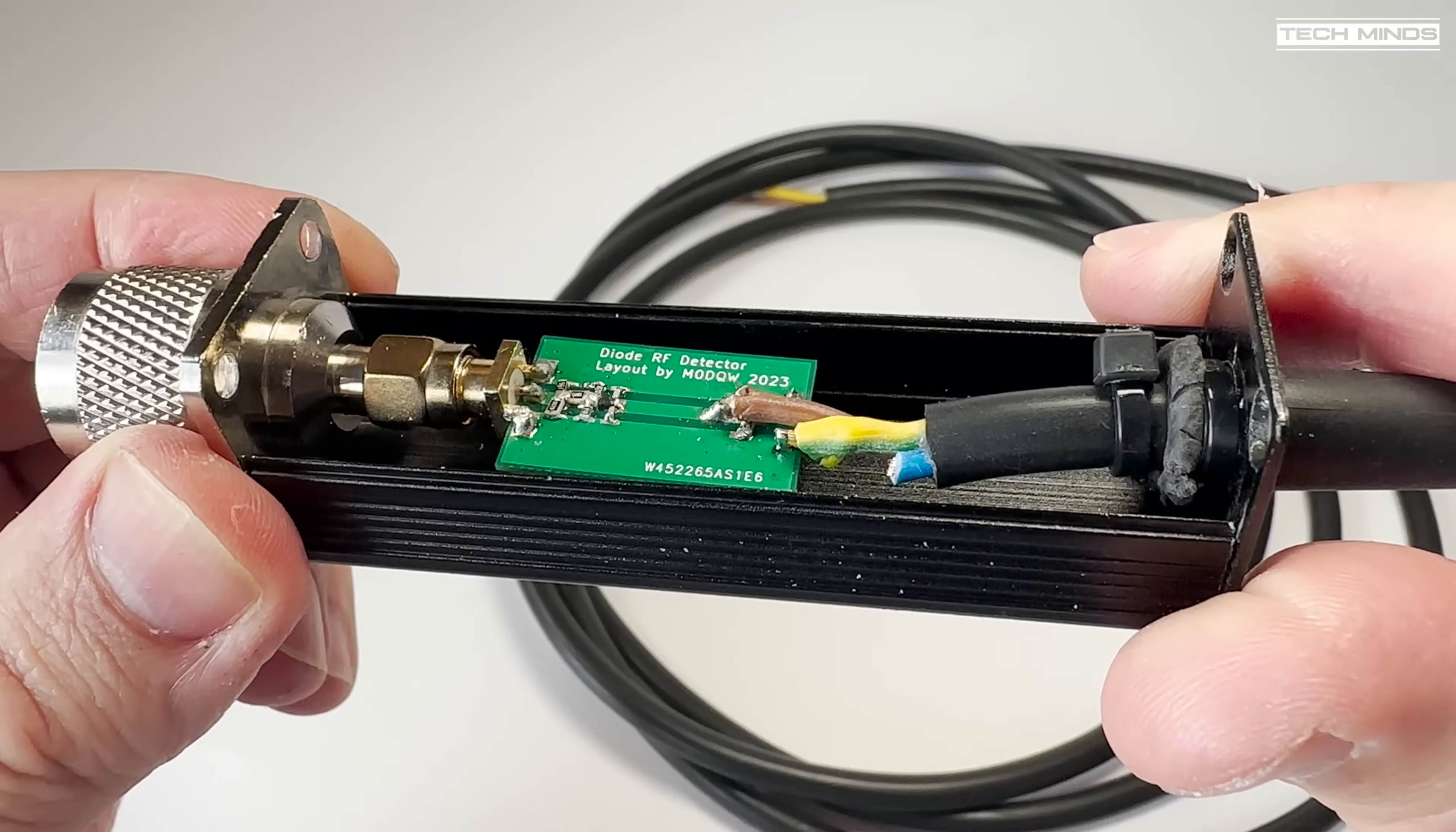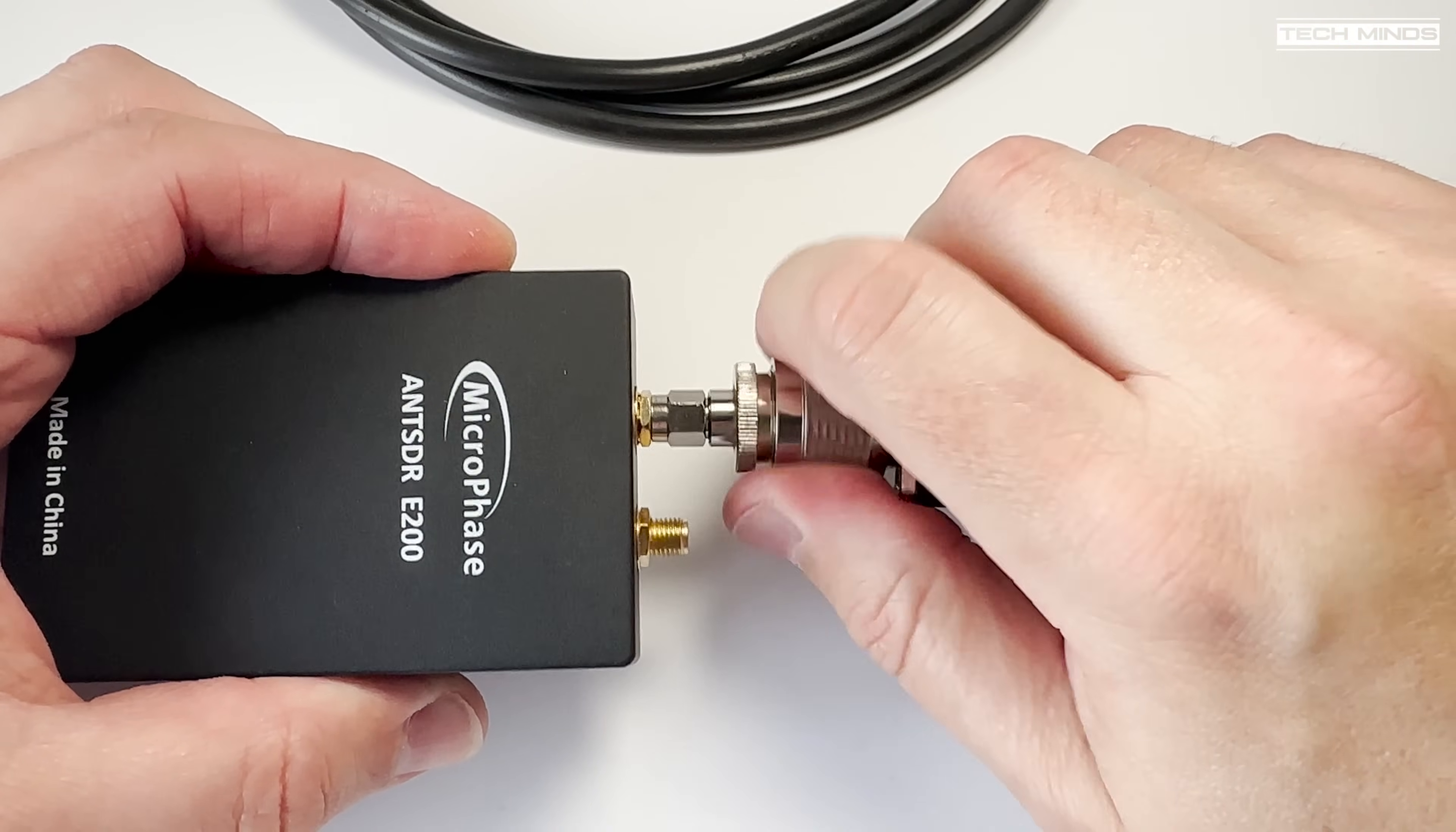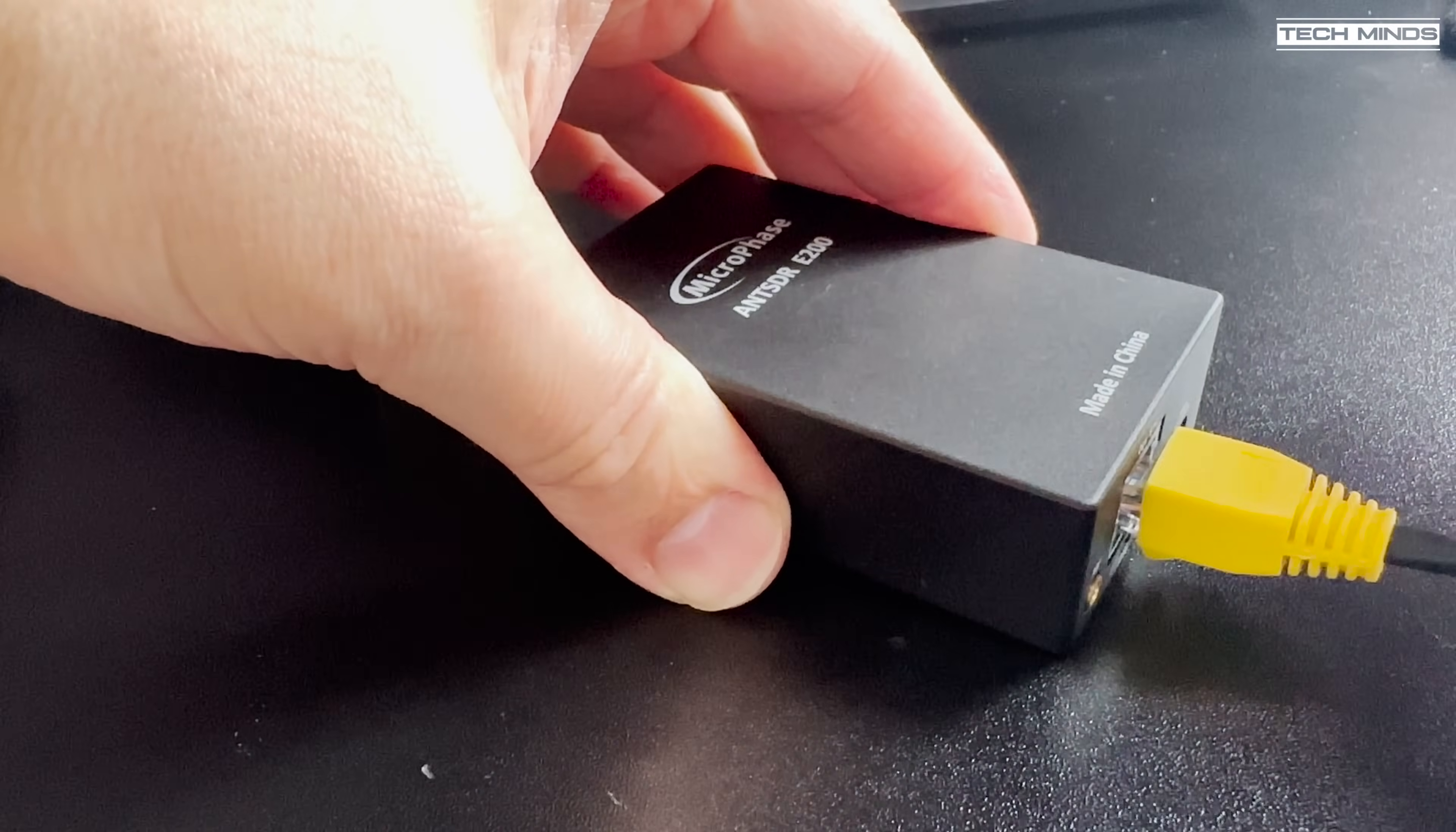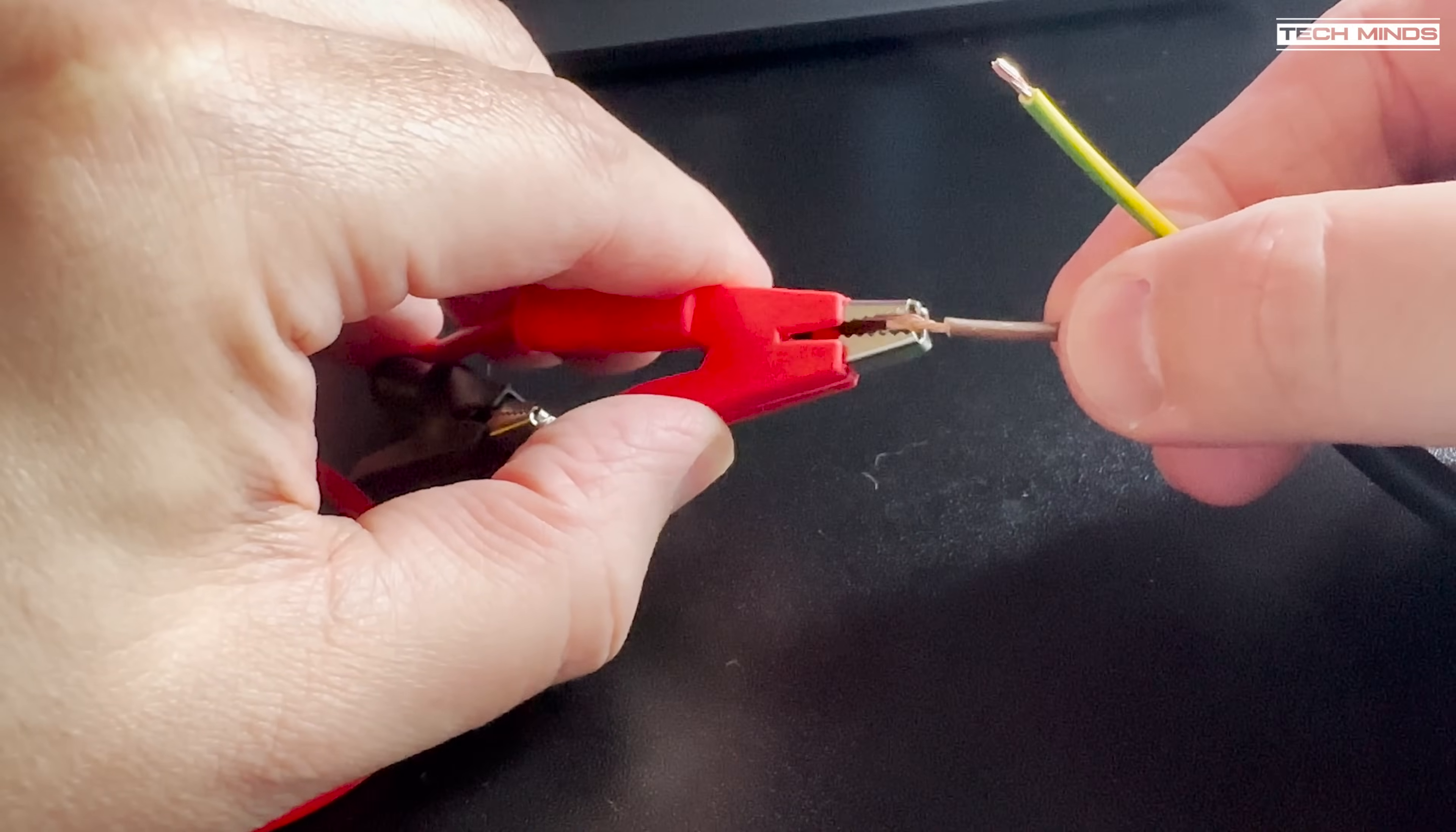With all the case assembled, it's now time to test. For this test, I'll use my Airspy E200, which I know emits around 10 dBm at 2.4 gigahertz, so it's going to be interesting to see the results. The other end of the cable which comes from the sensor was then attached to a multimeter.